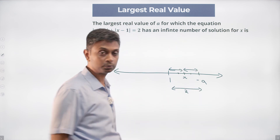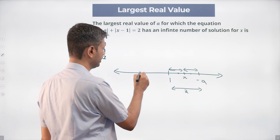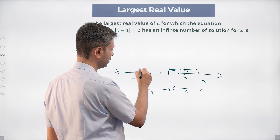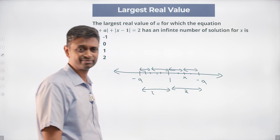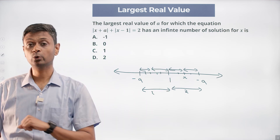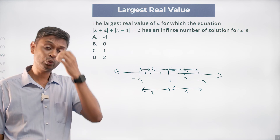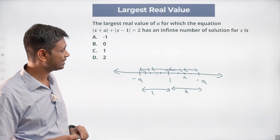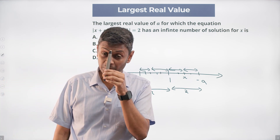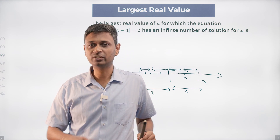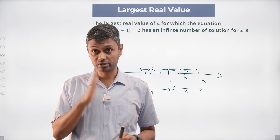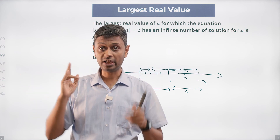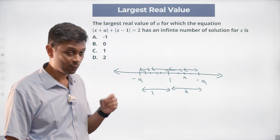If x is anywhere between 1 and -a, this distance plus this distance will be 2. Or -a could be on the other side, the distance still being 2, with x anywhere between them — that's the scenario we're looking for. Otherwise there will be a unique number of solutions. So we're basically saying x can be anywhere between 1 and -a, and the distance between 1 and -a is 2.